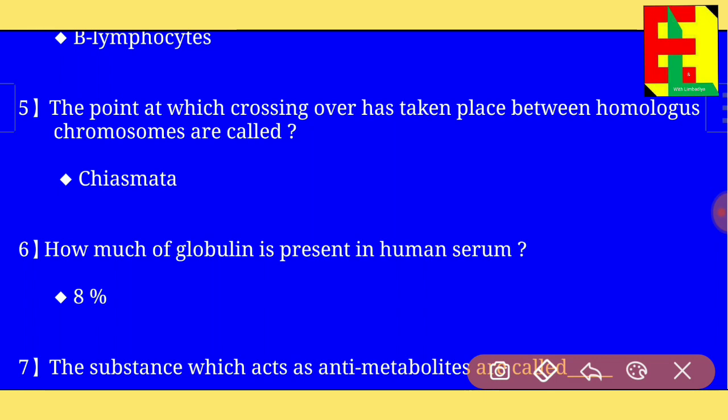Question number five: the point at which crossing over has taken place between homologous chromosomes is called chiasmata.